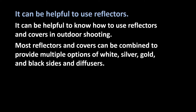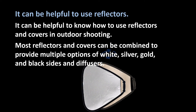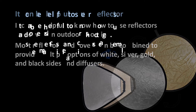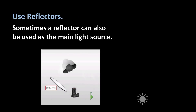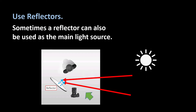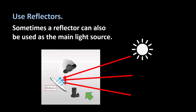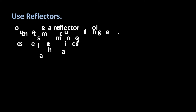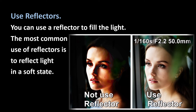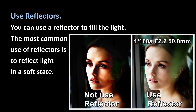It can be helpful to know how to use reflectors and covers in outdoor shooting. Most reflectors and covers can be combined to provide multiple options: white, silver, gold, and black sides, and diffusers. First, sometimes a reflector can also be used as the main light source. Second, you can use a reflector to fill the light — the most common use of reflectors is to reflect light in a soft state.